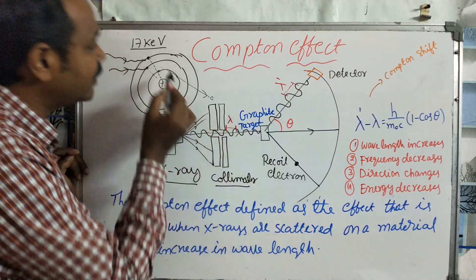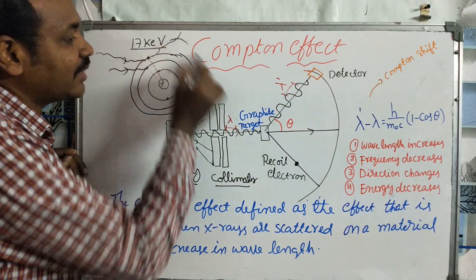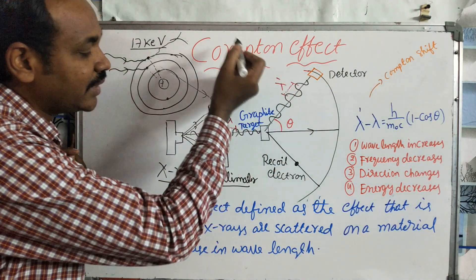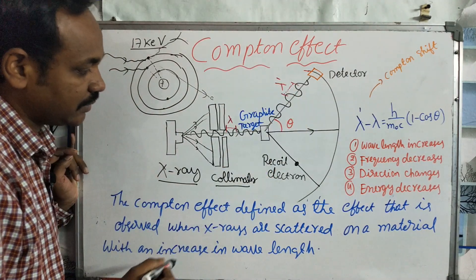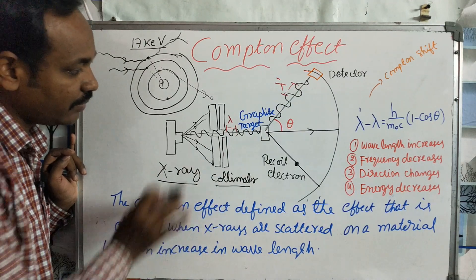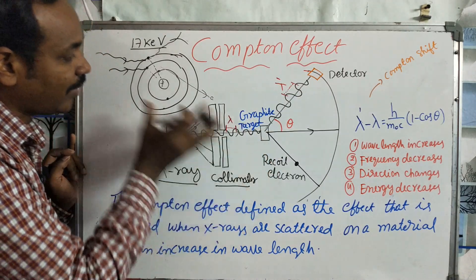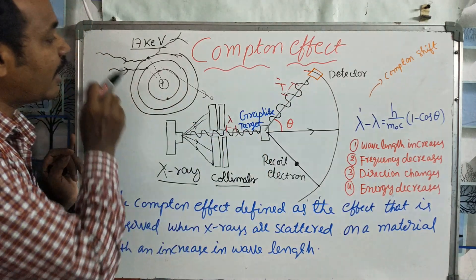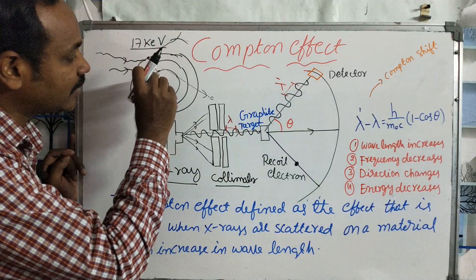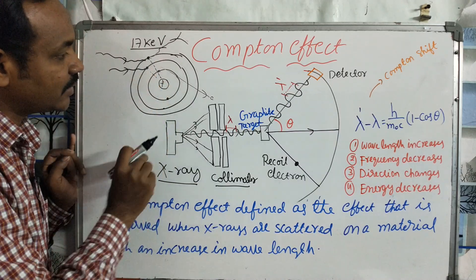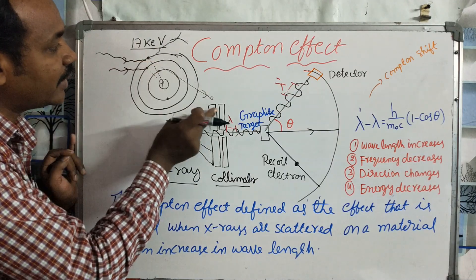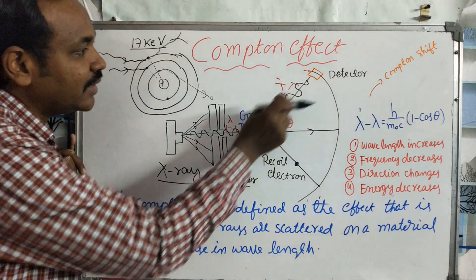The electron is ejected by taking some energy. The remaining energy after ejection is scattered. This remaining energy is what we observe as the scattered radiation in the Compton Effect. The X-ray gives energy to the electron — the binding energy is used to free the electron, and the remaining energy goes into the scattered X-ray with a longer wavelength.